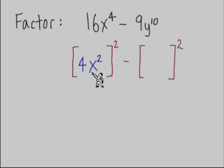So it's 4x squared is this term in the first box. 4x squared to the second power would equal 16x to the fourth.